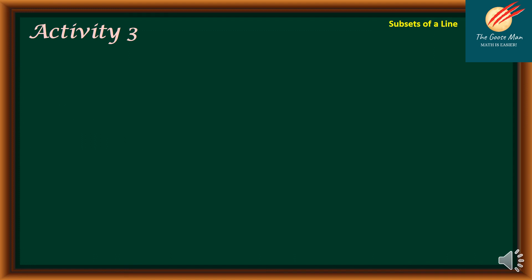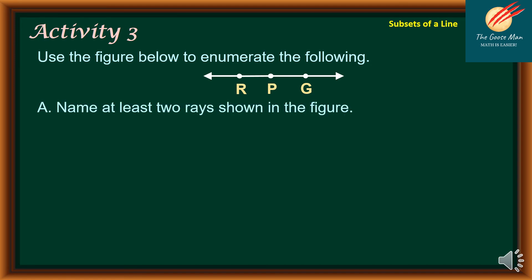Let's move on to activity number three. Use the figure below to enumerate the following. This is the figure. We have points R, P, and G are collinear. Name at least two rays shown in the figure. I can have here ray PR and the other one is ray PG.